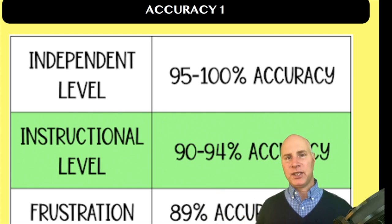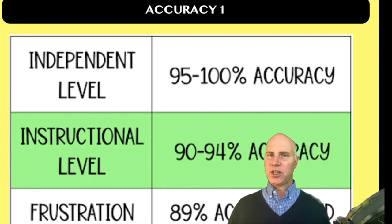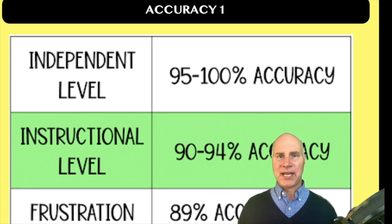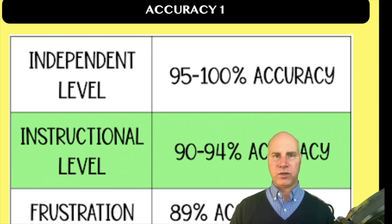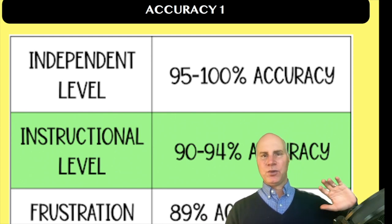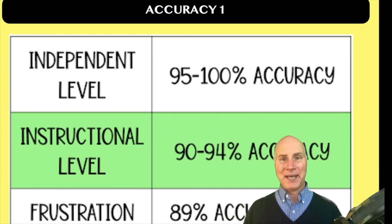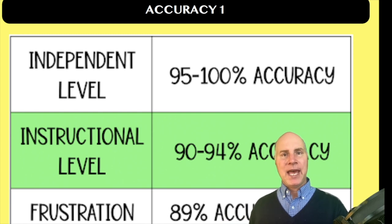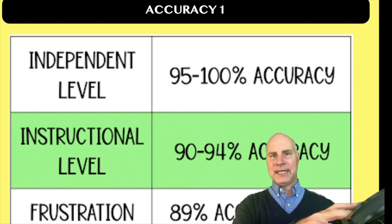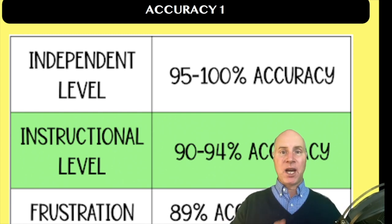And then the final level is frustrational. Frustrational, they're getting less than 90%. And I want you to remember with frustrational, this isn't the best book to build fluency. Now, it doesn't mean the student can't attempt to read a book at a frustrational level. It just means that if you're trying to build the student's speed, accuracy, and expression, a book at the frustration level might not be the best choice.